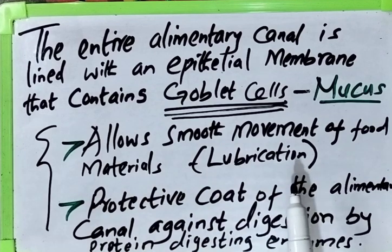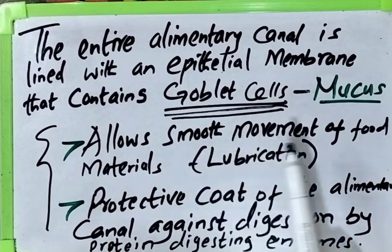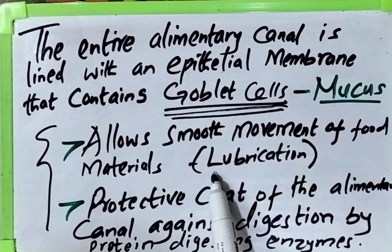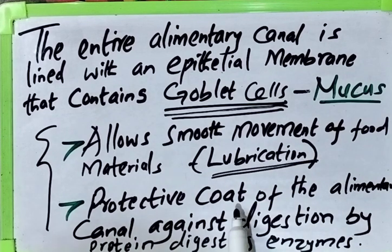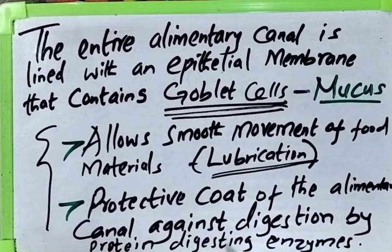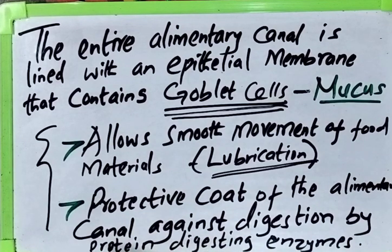Number two, mucus acts as a protective coat of the alimentary canal against digestion by the protein-digesting enzymes. It prevents the alimentary canal from being digested by the protein-digesting enzymes. Those are the two functions of mucus, and that brings me to the end of digestion in the ileum.